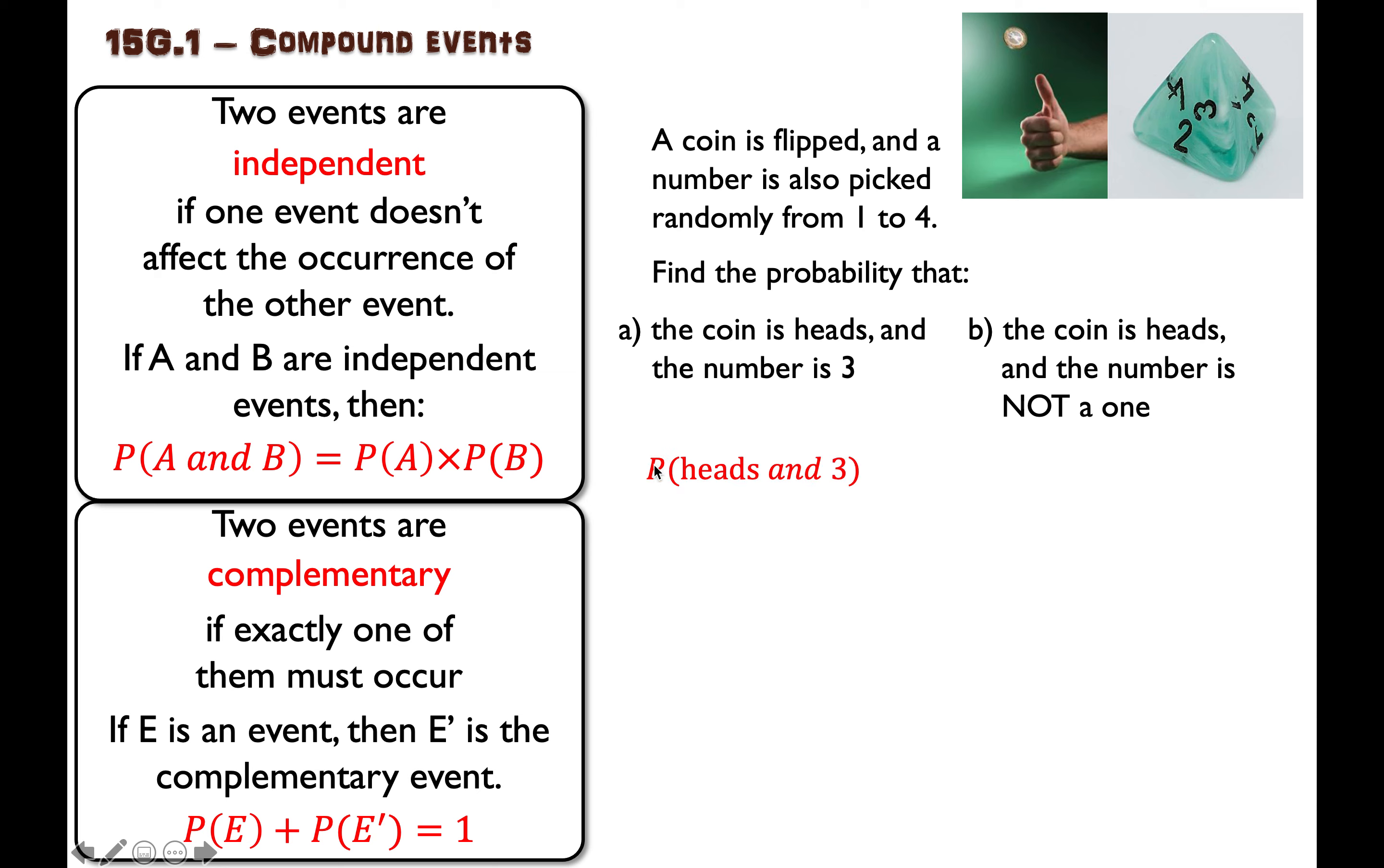So the probability of getting a heads and a three is the probability of heads on the coin multiplied by the probability of a three for the number.